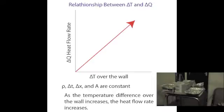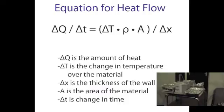The graph shows the relationship between the change in temperature and the heat flow. The greater the difference in temperature over the material, the greater the heat flow rate. So, in the winter, heat flows out of the building at a faster rate.